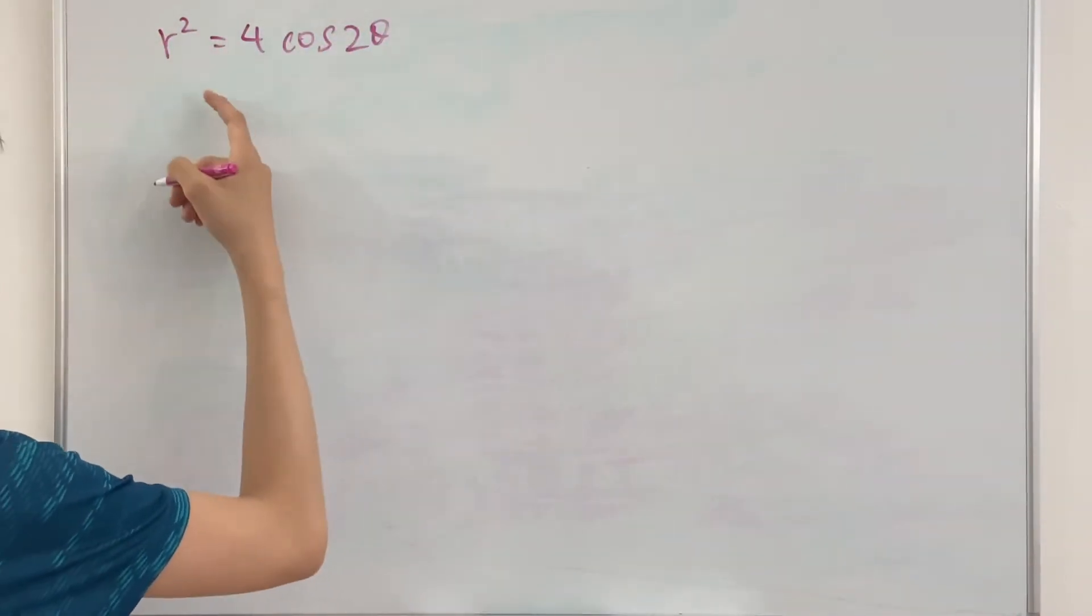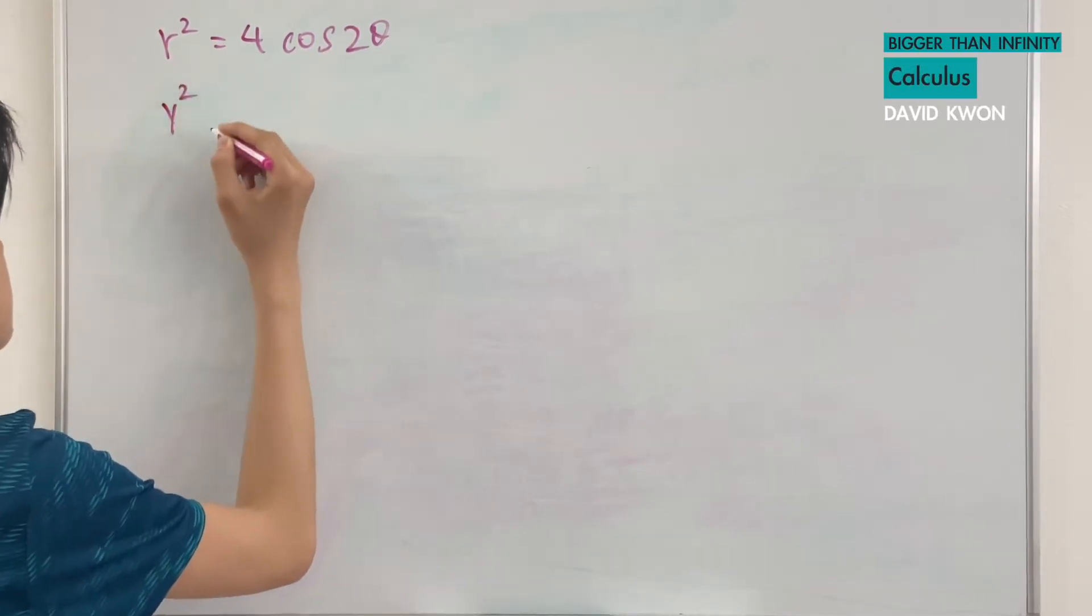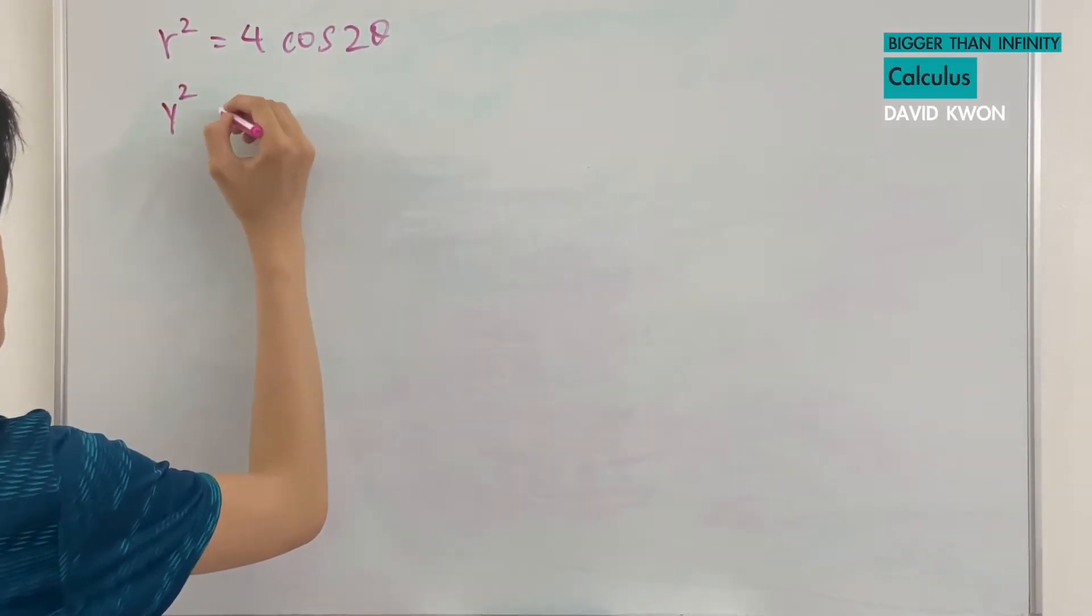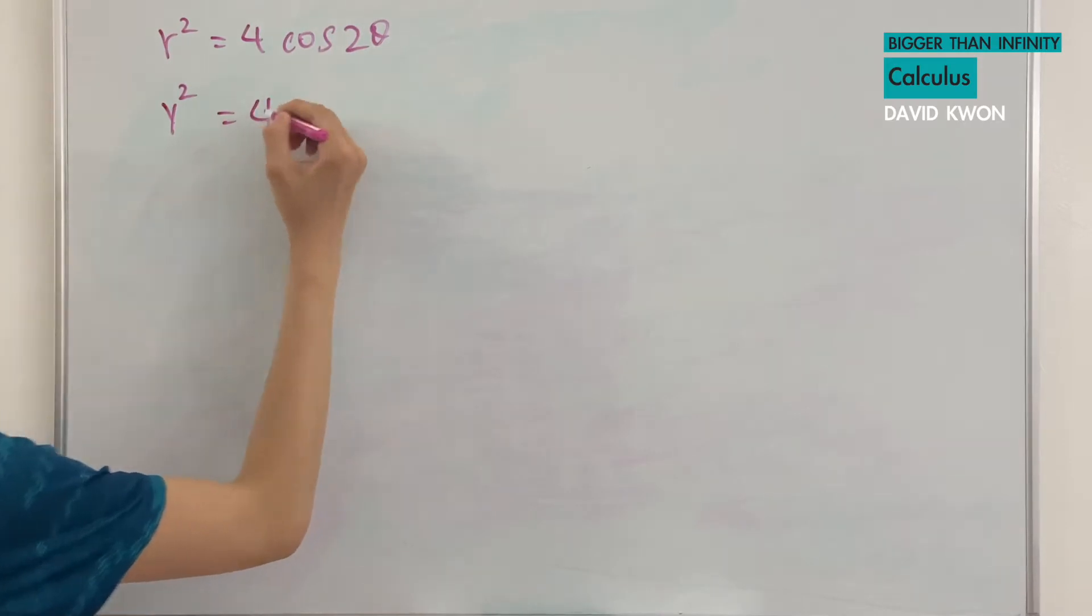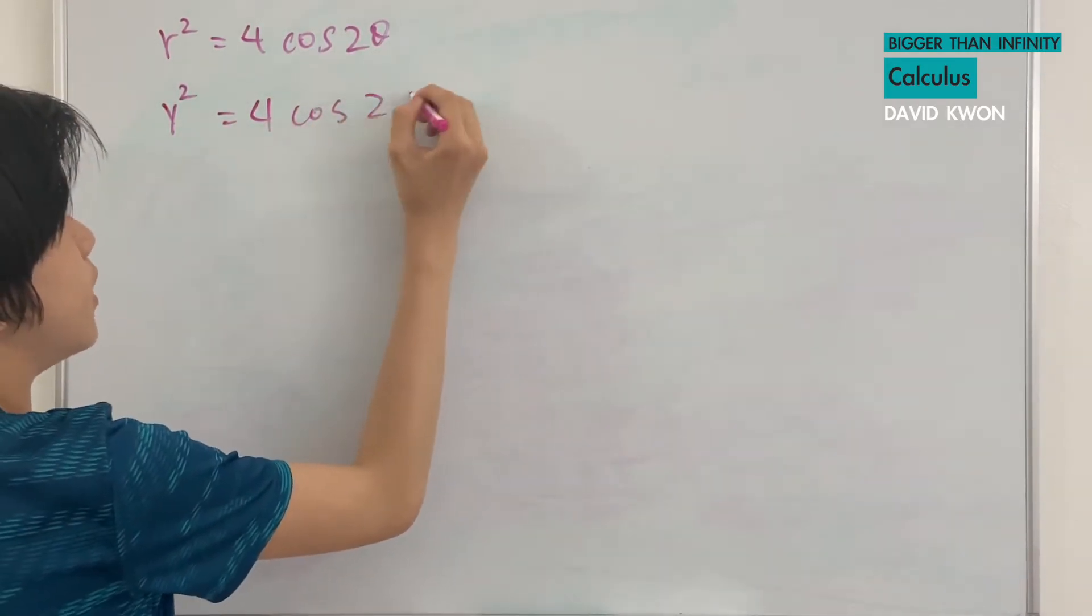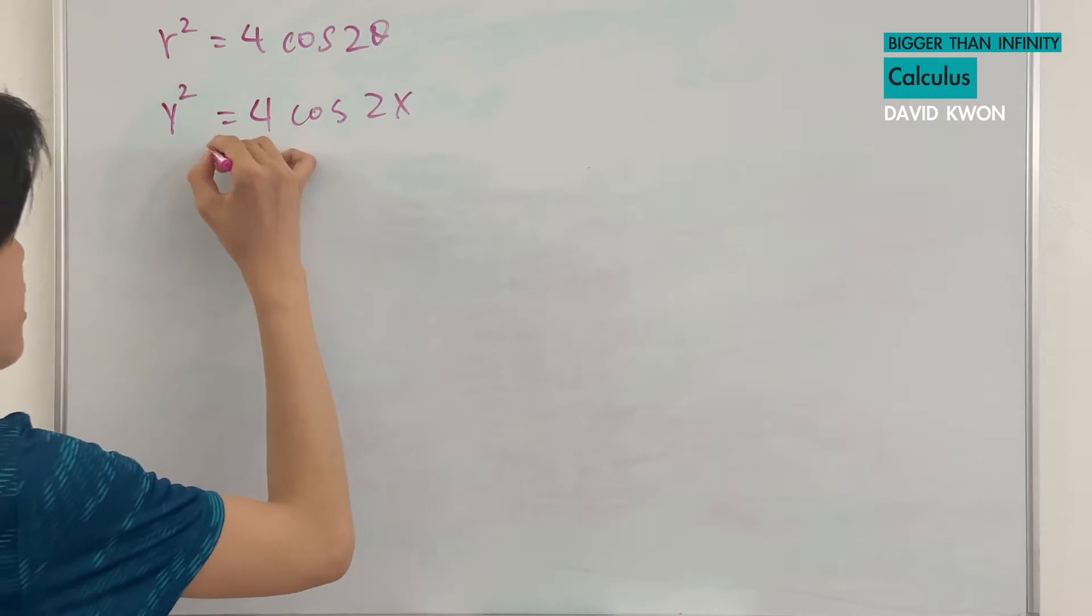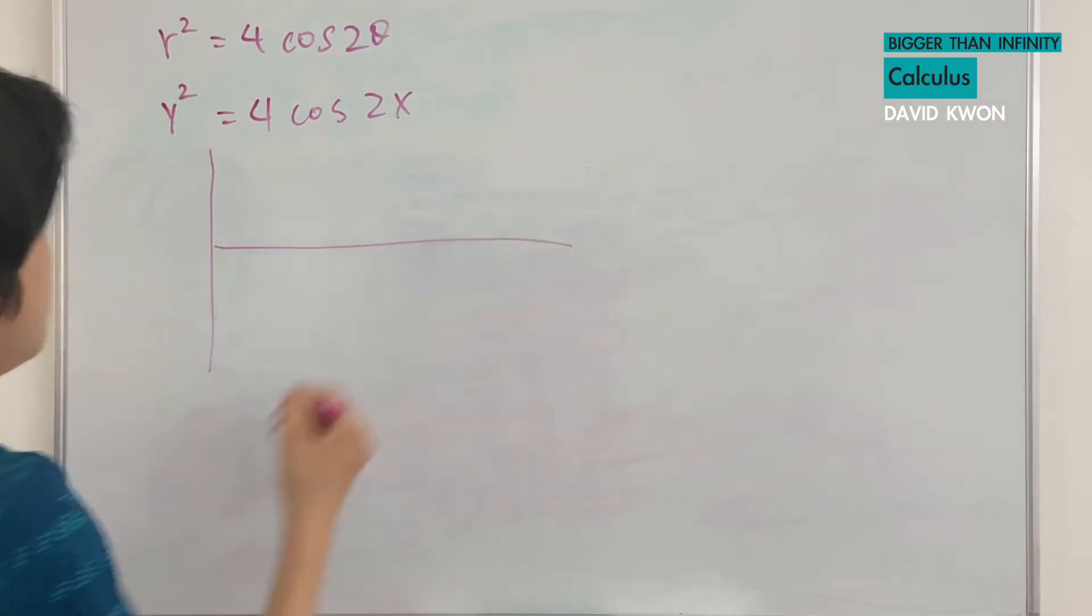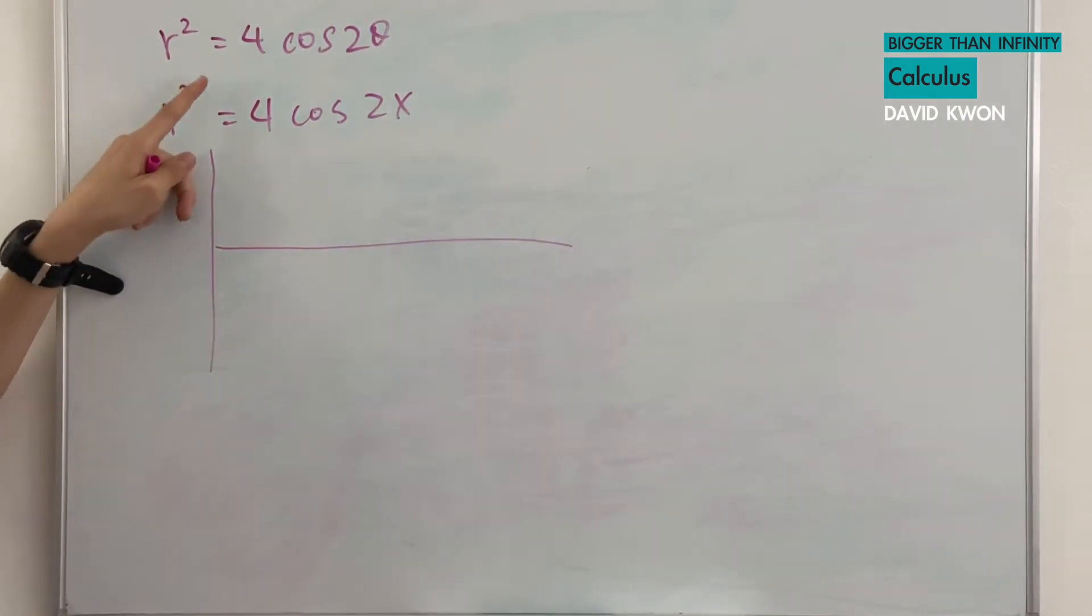So first, let's set this in terms of y and x, which is going to be y squared is equal to 4 cos 2x. And let's graph this like that, and let's just ignore the y squared and just graph it normally.